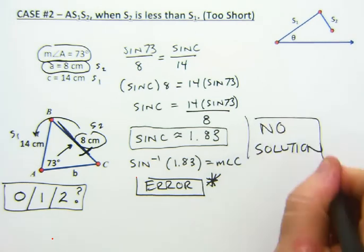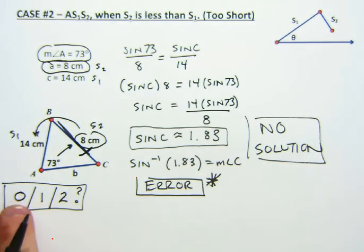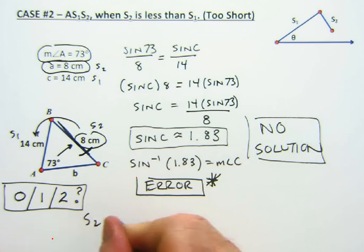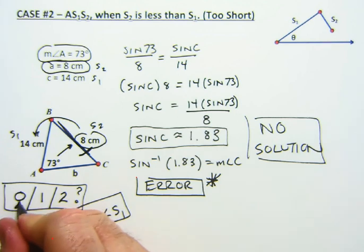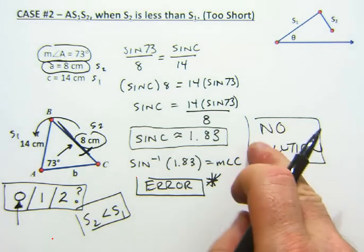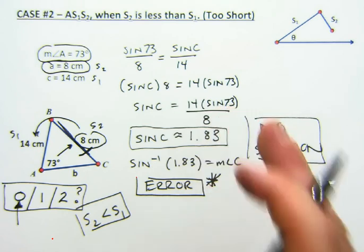Now remember, I didn't know it was the no solution case. I knew it was one of the possible things that could happen because side 2 was shorter than side 1. But I didn't know which one it is. But I do know now that there is no solution to this problem. It was just too short.